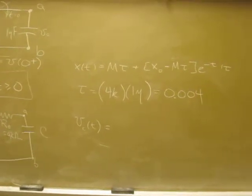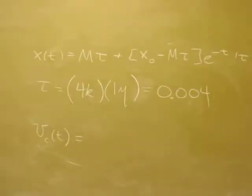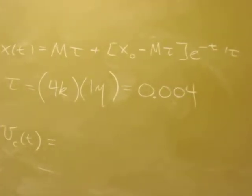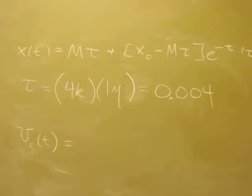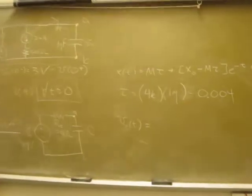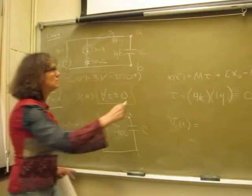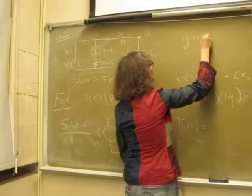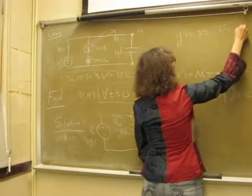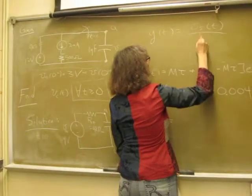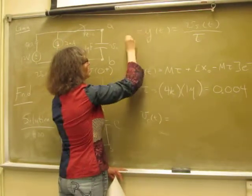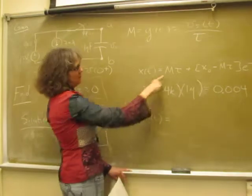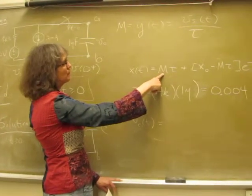What's M? Remember M was Y(T) - going back here, Y(T) equals VS(T) over τ. We're saying Y is constant, so this is our forcing function, M.